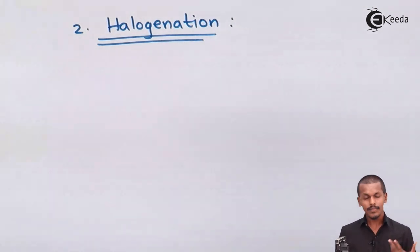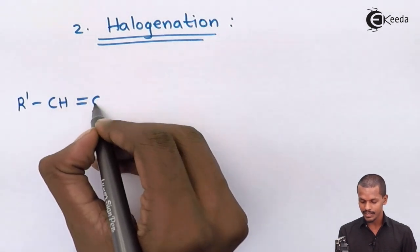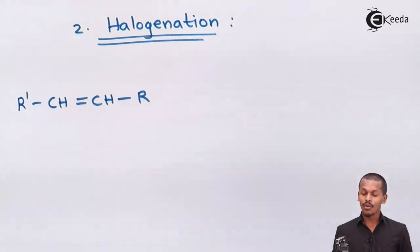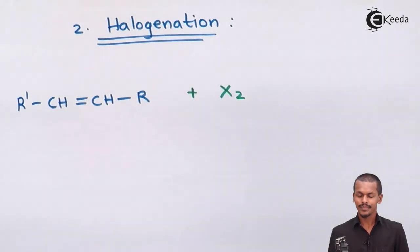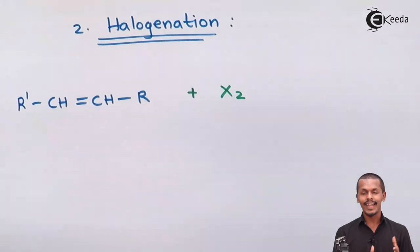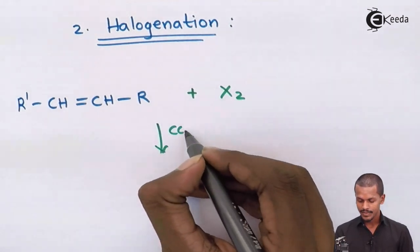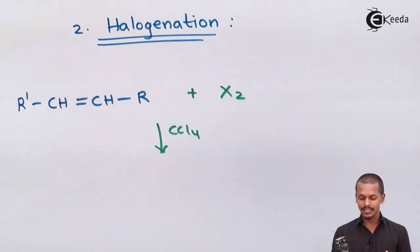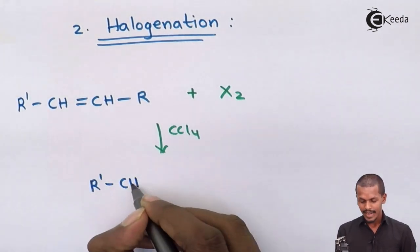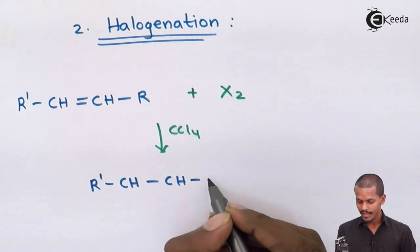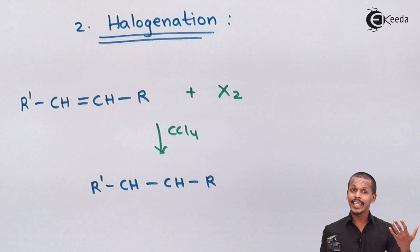In this reaction, the carbon-carbon double bond breaks into a single bond, and the two halogen atoms attach to the adjacent carbons — similar to what happens in the hydrogenation process. One halogen attaches to one carbon and the other to the adjacent carbon.